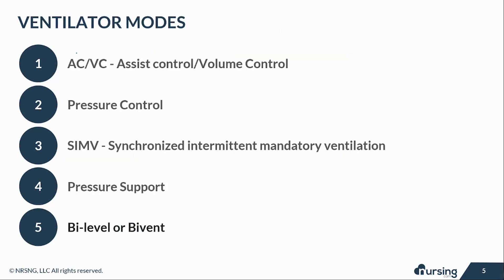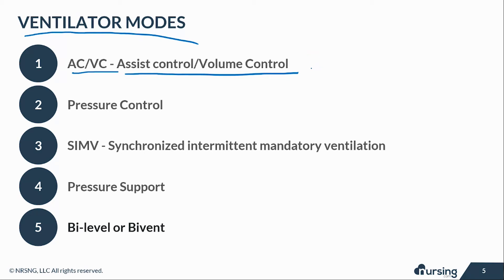Let's talk about different ventilator modes. Keep in mind that some hospitals have ventilators that combine many of these modes or have highly advanced vents with different modes — these are the most basic ones. The first is the AC/VC, or assist control volume control mode. In this mode, the ventilator delivers a set tidal volume. For example, if respirations are set at 12 per minute and tidal volume is set at 500, the ventilator guarantees a volume of 500 with each breath. This is typically used for patients who are unstable and need full ventilatory support.